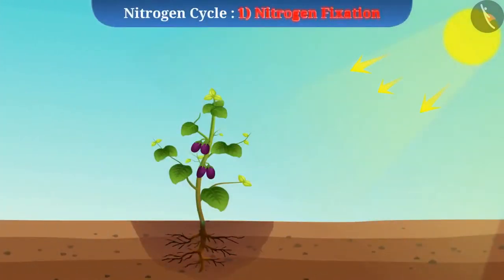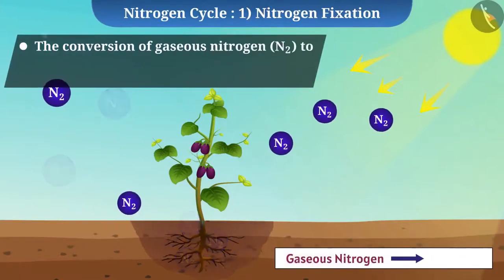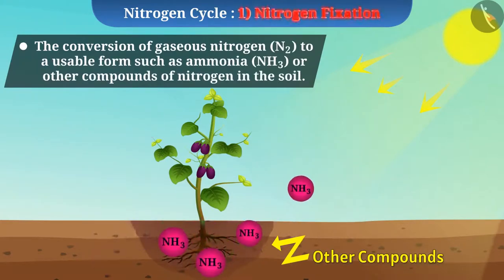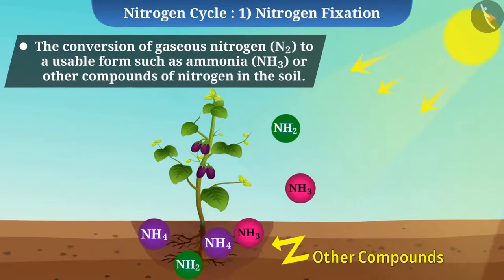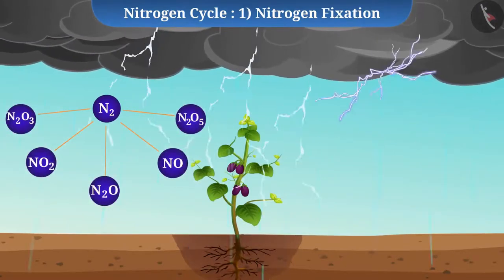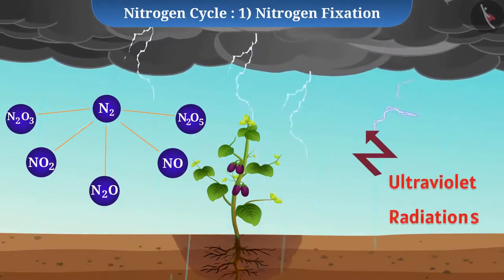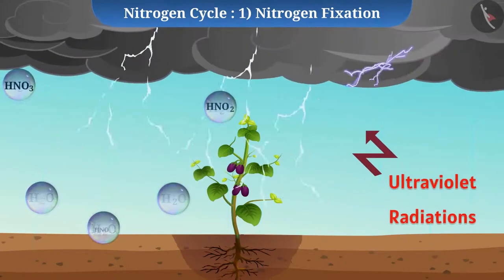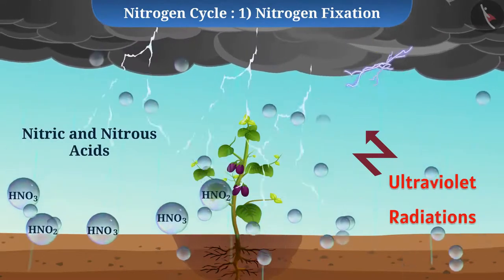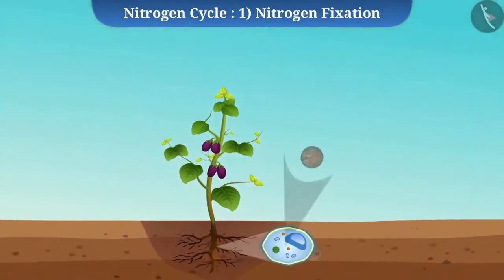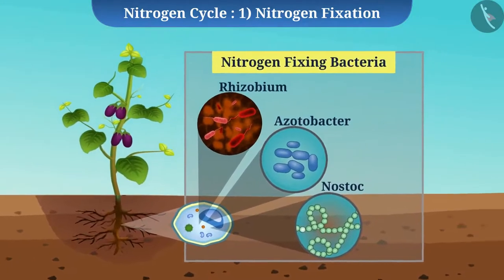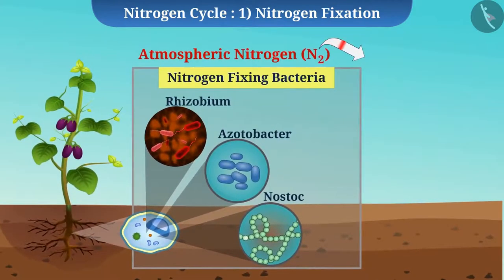Nitrogen fixation. The conversion of gaseous nitrogen to a usable form such as ammonia or other compounds of nitrogen in the soil, so that plants can use them, is called nitrogen fixation. In the atmosphere, the nitrogen gas is converted to oxides of nitrogen with the help of energy generated during lightning and by using the energy from ultraviolet radiations. These oxides dissolve in water to give nitric and nitrous acids, which fall on land along with rain and become readily available for use by plants. Certain bacteria such as Rhizobium, Azotobacter, and Nostoc are called nitrogen-fixing bacteria because they are able to convert atmospheric nitrogen to nitrates and nitrites.